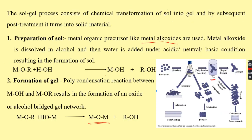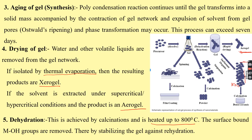In summary, synthesis by the sol-gel method involves six steps. Step one is preparation of the sol: metal organic precursors like metal alkoxide are reacted with alcohol, then water is added under acidic conditions to obtain metal oxides or metal hydroxides. Step two is gel formation via polycondensation between metal alkoxide and metal hydroxide, resulting in an oxide- or alcohol-bridged gel network. Step three is aging, where polycondensation continues until the gel transforms into a solid mass with contraction of the network and expulsion of solvent from pores — this may take around seven days.